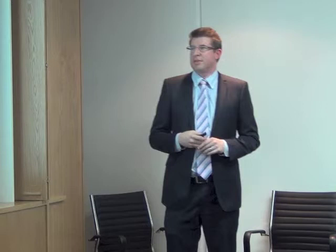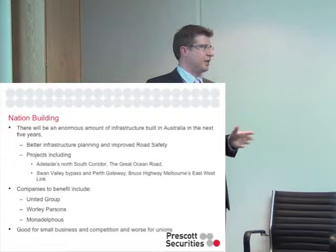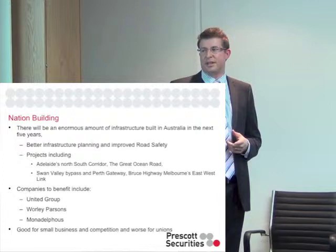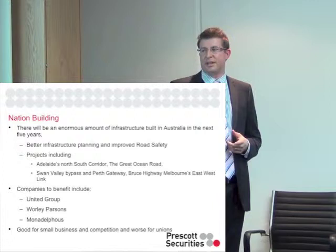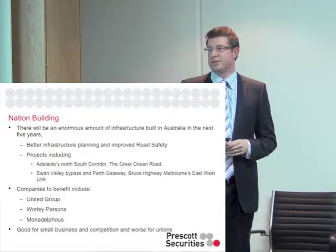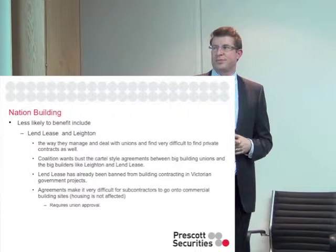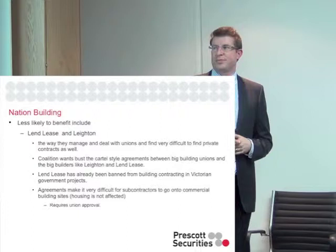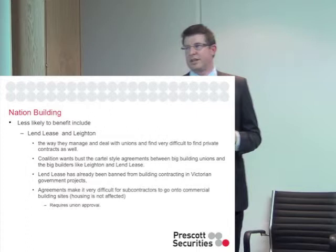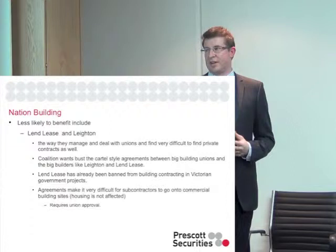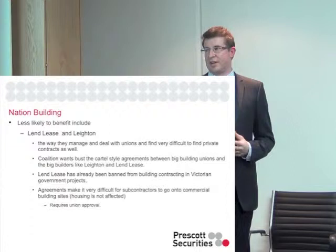There's also a large amount of infrastructure in the coalition's policies. Projects include the North-South Corridor here in Adelaide, the Great Ocean Road, and Swan Valley. Companies to benefit include United Group, which has had a torrid time over the last six months, Worley Parsons, and Monadelphous. We think it's good for small businesses. Notably, we haven't included Leighton and Lendlease, because they've organised deals with unions and have been excluded from some contracts in Victoria as a result. The coalition government is not going to be favourable to those arrangements and would rather see smaller businesses benefit.